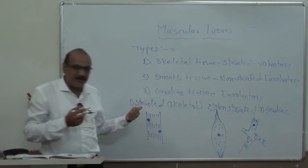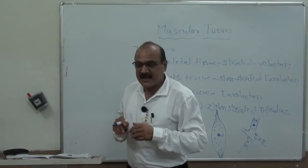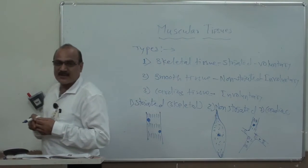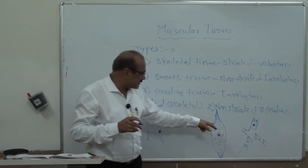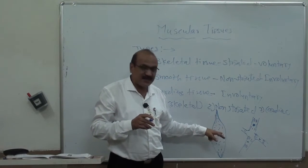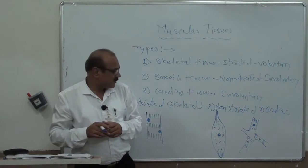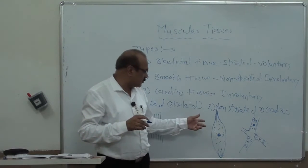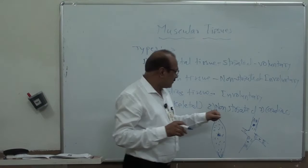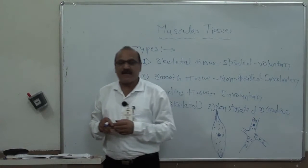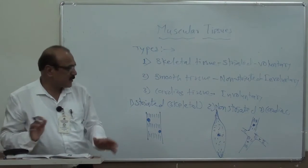Striated or skeletal muscles are found attached to the skeleton, and therefore they are part of skeletal tissues. Smooth muscles are present in the viscera — the smooth regions of the body such as the intestines. Cardiac muscles are found only in the heart.